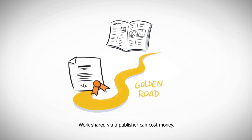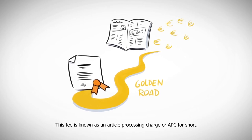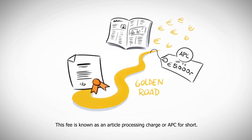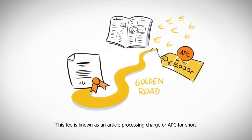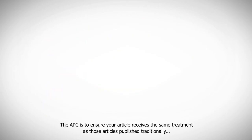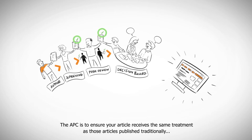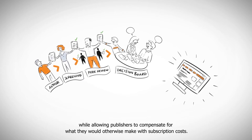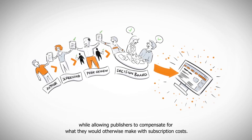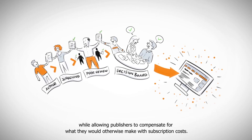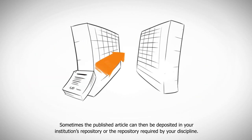Work shared via a publisher can cost money. This fee is known as an article processing charge, or APC for short. The APC is to ensure your article receives the same treatment as those articles published traditionally, while allowing publishers to compensate for what they would otherwise make with subscription costs.